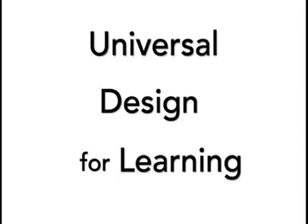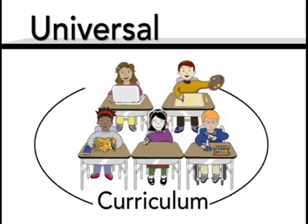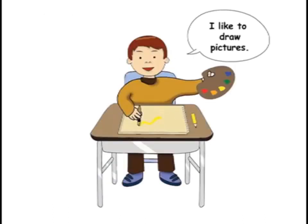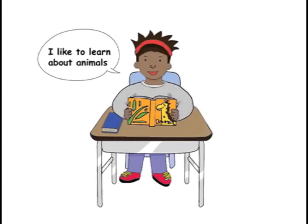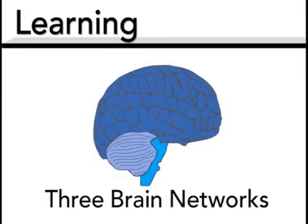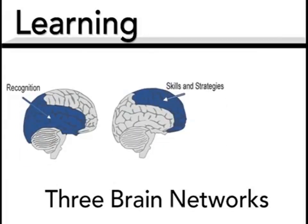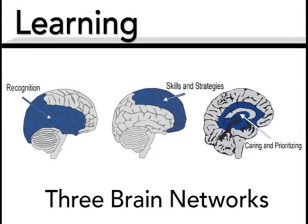By universal, we mean curriculum that can be used and understood by everyone. Each learner brings her own background, strengths, needs, and interests, and curriculum should provide genuine learning opportunities for each and every student. Learning is not one thing — neuroscience tells us that our brains have three broad networks: one for recognition (the what of learning), one for skills and strategies (the how of learning), and one for caring and prioritizing (the why of learning). Students need to gain knowledge, skills, and enthusiasm for learning.